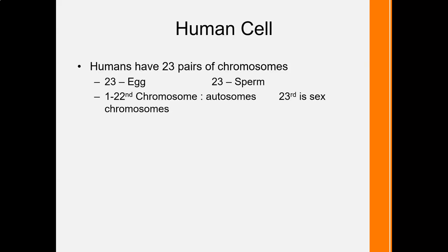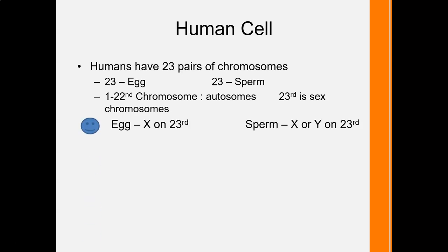Humans have 23 pairs of chromosomes — 23 from the egg and 23 from the sperm. From the 1st to the 22nd chromosome, these are called autosomes because they carry the same type of information whether from the egg or the sperm. The 23rd chromosome is special — it is considered the sex chromosome because it will determine the sex of the baby. If a pregnant couple wants to find out the sex, one option is chromosomal testing, specifically looking at the 23rd chromosome to see whether it is XX or XY.